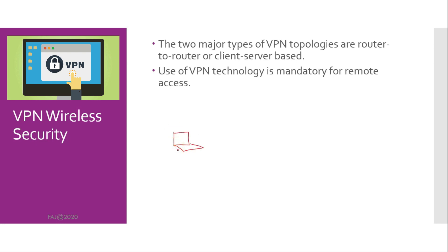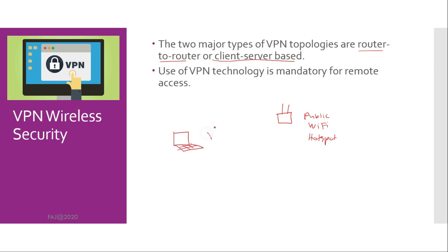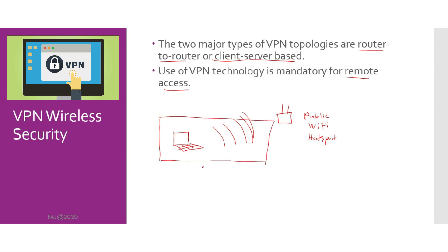VPN Wireless Security. VPNs were often used for WLAN security because the VPN solution was already in place inside the wired infrastructure. The two major types of VPN topologies are router-to-router or client-server based. Use of VPN technology is mandatory for remote access. End users will take their laptops off-site and will most likely use public access Wi-Fi hotspots. Because there is no security at most hotspots, a VPN solution is needed. The VPN user will need to bring the security to the hotspot in order to provide a secure, encrypted connection. It is imperative that users implement a VPN solution coupled with a personal firewall whenever accessing any public access Wi-Fi networks.